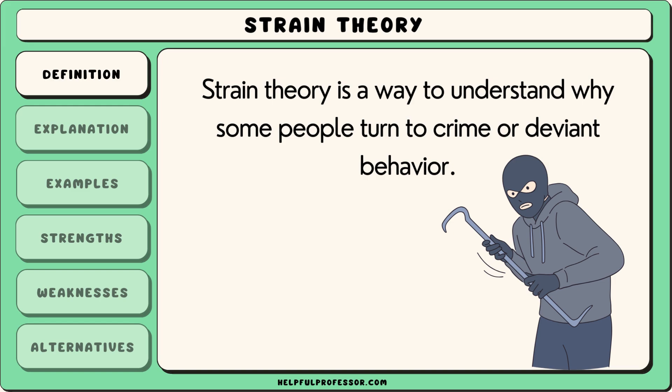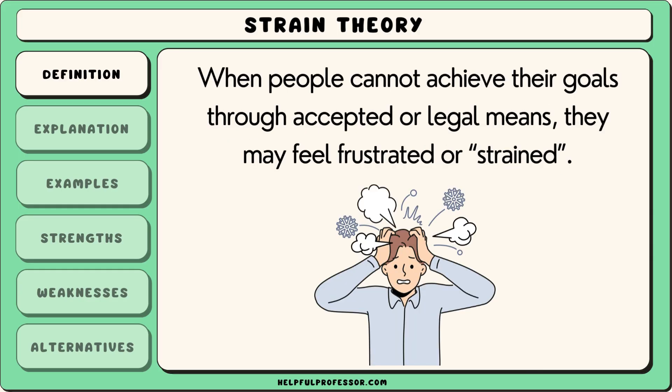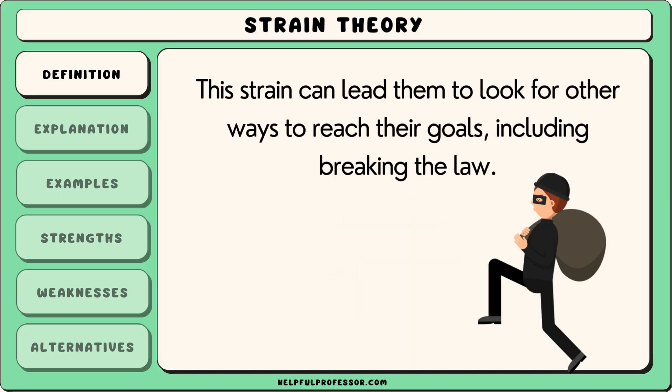Strain theory is a way to understand why some people turn to crime or deviant behaviour. It suggests that when people cannot achieve their goals through accepted or legal means, they may feel frustrated or strained. This strain can lead them to look for other ways to reach their goals, including breaking the law.